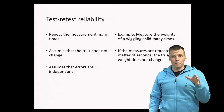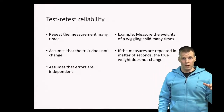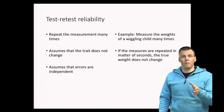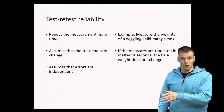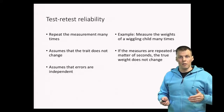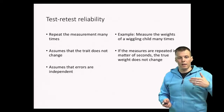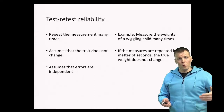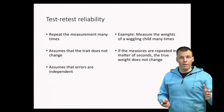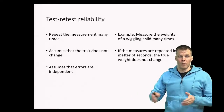The idea of test-retest reliability is that if the attribute we are measuring is relatively stable over time, then if a person tests differently at a different occasion, the only reason for the difference between the two tests is unreliability — because the trait is stable and errors are independent, which is justified by the time delay, meaning you don't remember your previous answer.